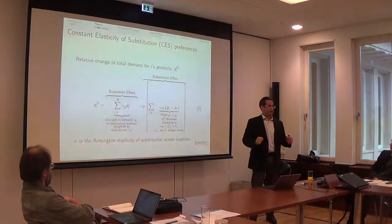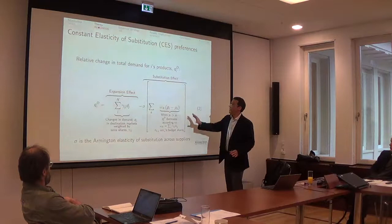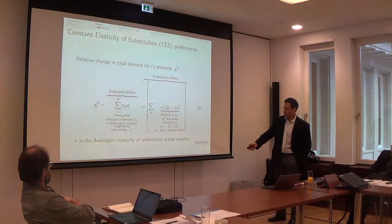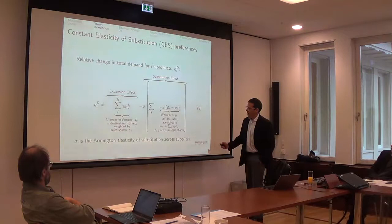And then there is a substitution effect. That is where most of the action of what I'm looking for will come from. Key parameter, the elasticity of substitution. This is the Armington elasticity of substitution across suppliers. And then we have this ugly looking term here.